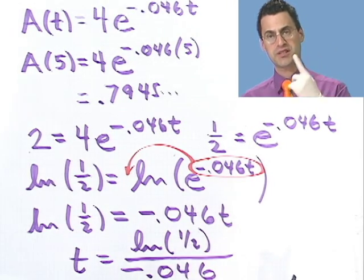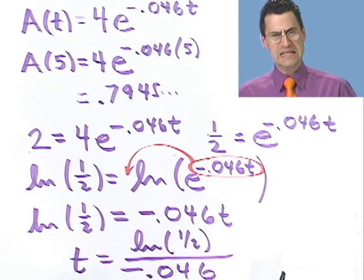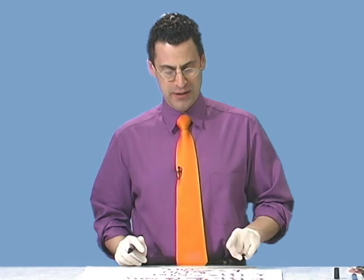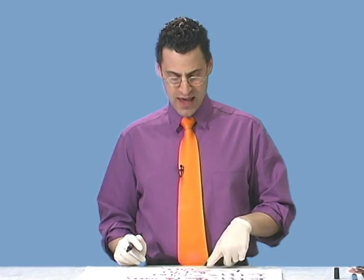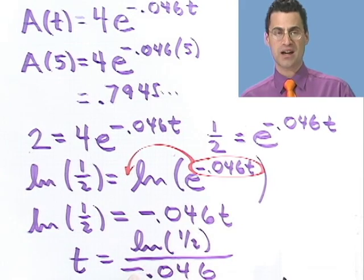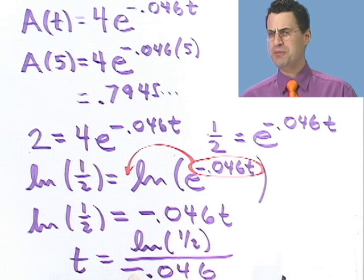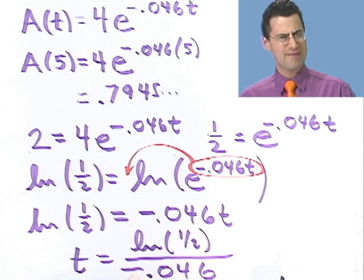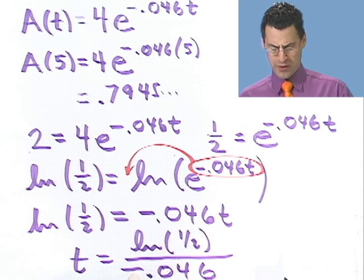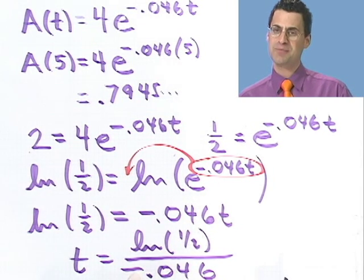Now, before I compute that, let's just think about this. There could be a problem here, because t is time — it's the waiting time for half-life. And I see a negative sign there. How could the time be negative? How come I have to go backwards in time in order to have half as much? Sounds like there could be a problem.